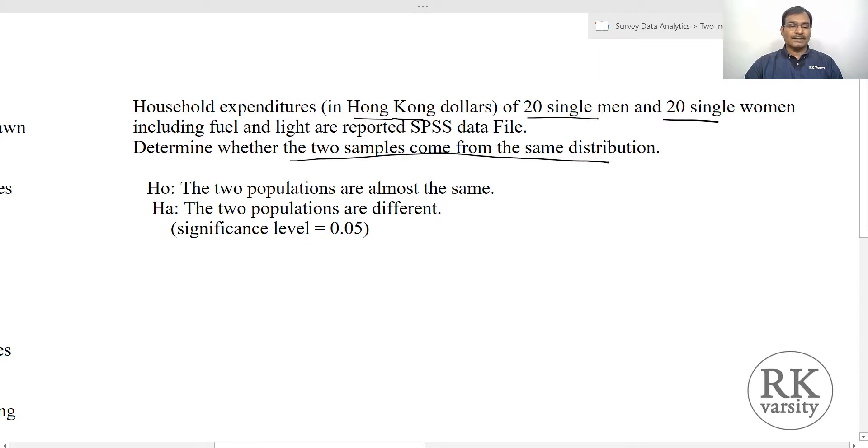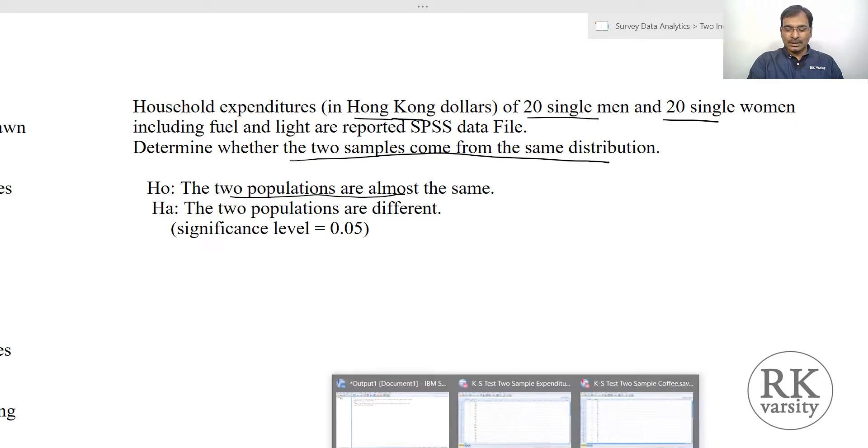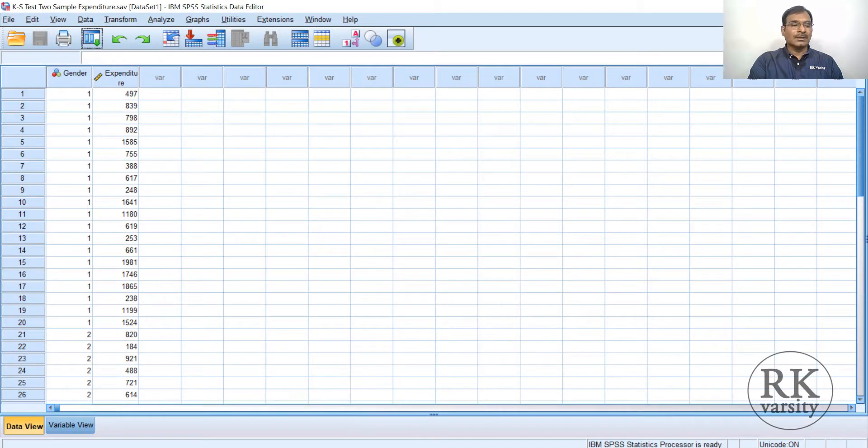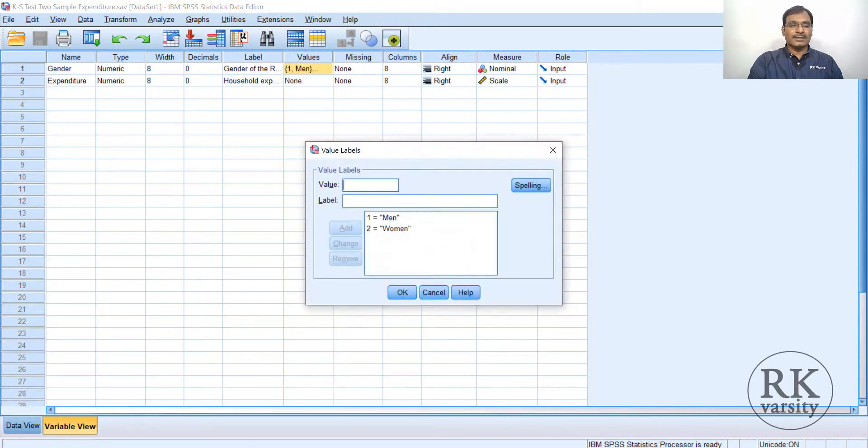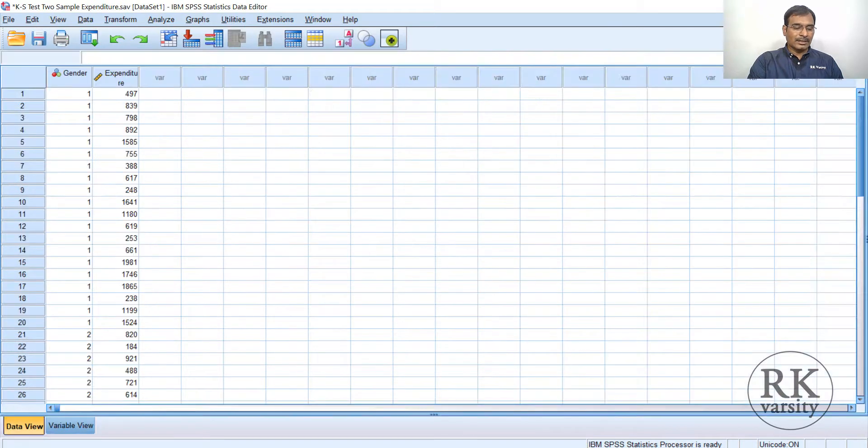Determine whether the two samples come from the same distribution or not. The null hypothesis we frame here is that the two populations are almost the same, and the alternative hypothesis is that the two populations are different. After defining your hypothesis, here is the data sheet. First we go to the variable view. Gender is one variable—men and women. Expenditure is another variable. The grouping variable is gender: one for men and two for women. In the data view, you have the data.